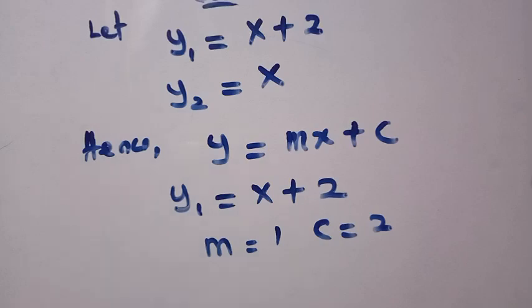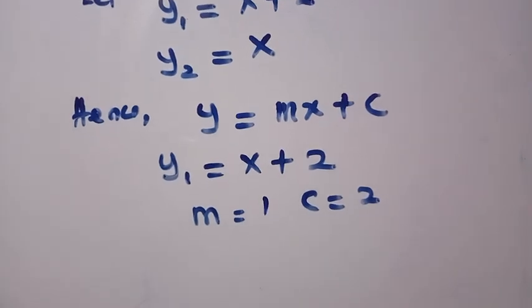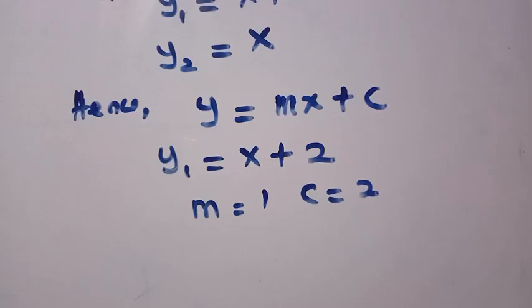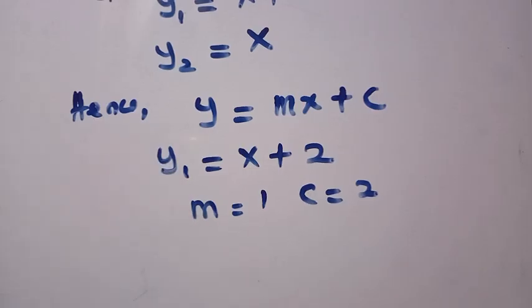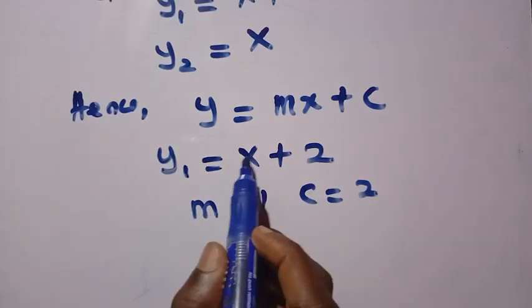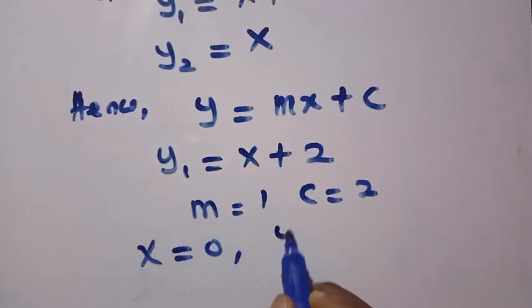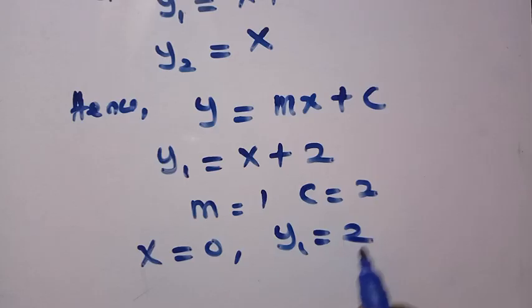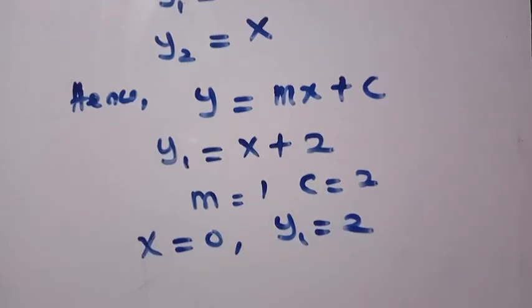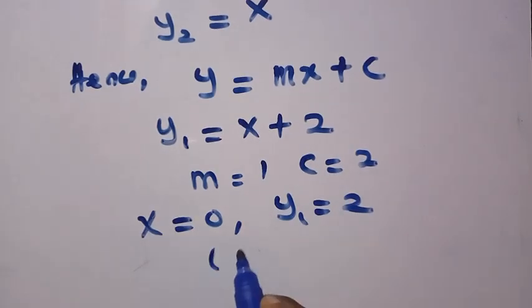Then, when we proceed for the other equation here, and when m equals to 1 and c here equals to 2, it shows that at a point, here we are going to have, if x equals to 0, definitely our y1 will be equals to 2. That is, both of them as the coordinate of 0, 2.